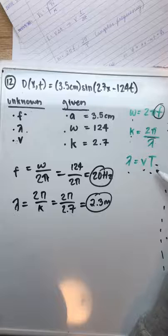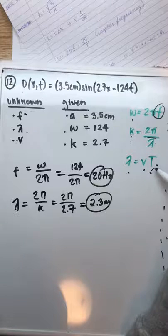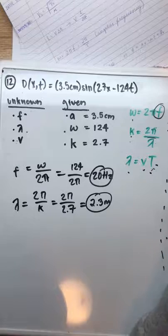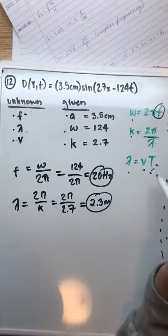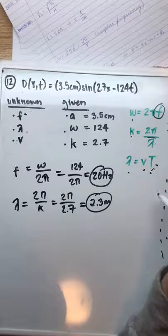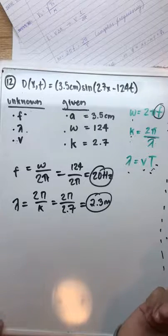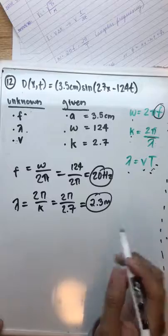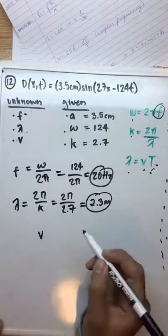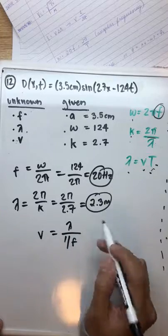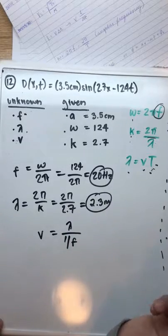But looking closer at this equation written down, we don't have period, so we have to find an equation that incorporates frequency. And that's simple because t is the same as 1 over f.